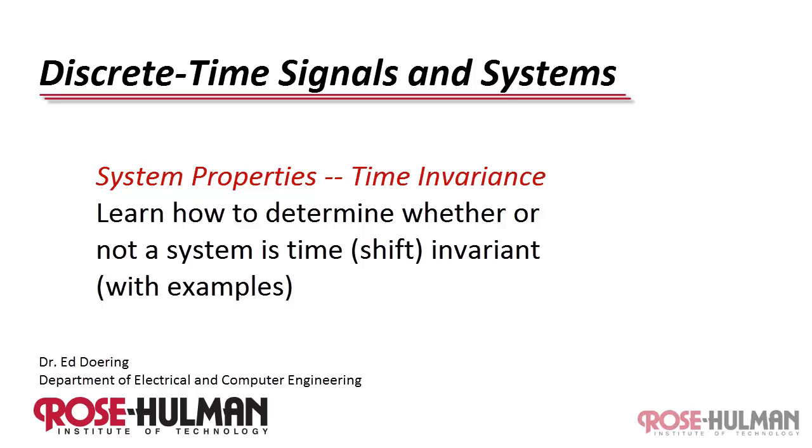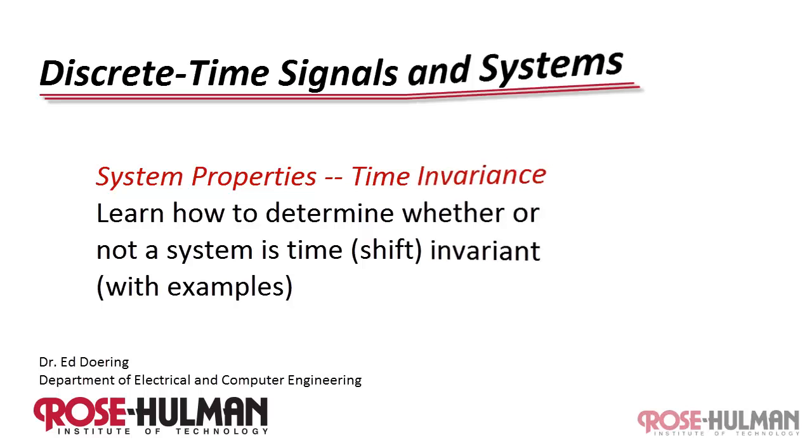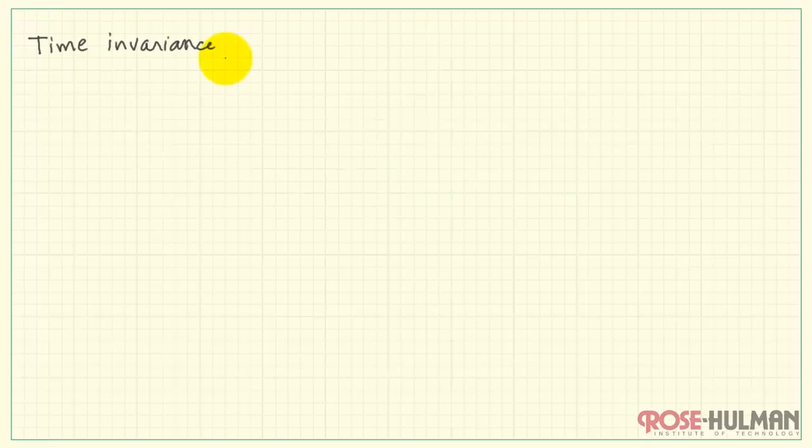Let's take a look at the system property called time invariance, and especially how to determine whether or not a system is time invariant. Time invariance is a system property, also known as shift invariance. The notion of shifting the signal is really critical to understanding what time invariance really means.